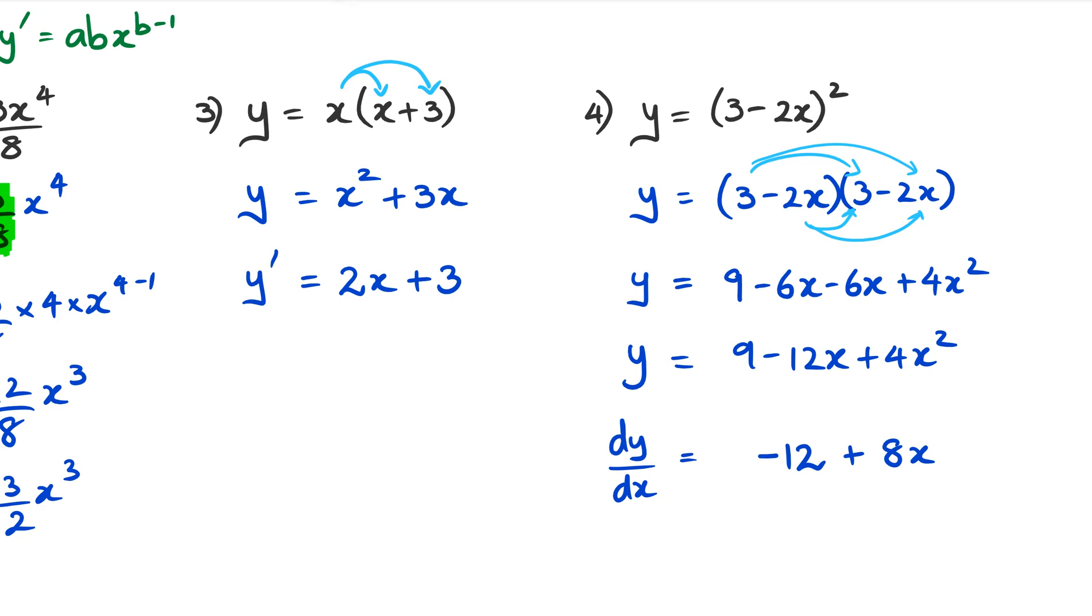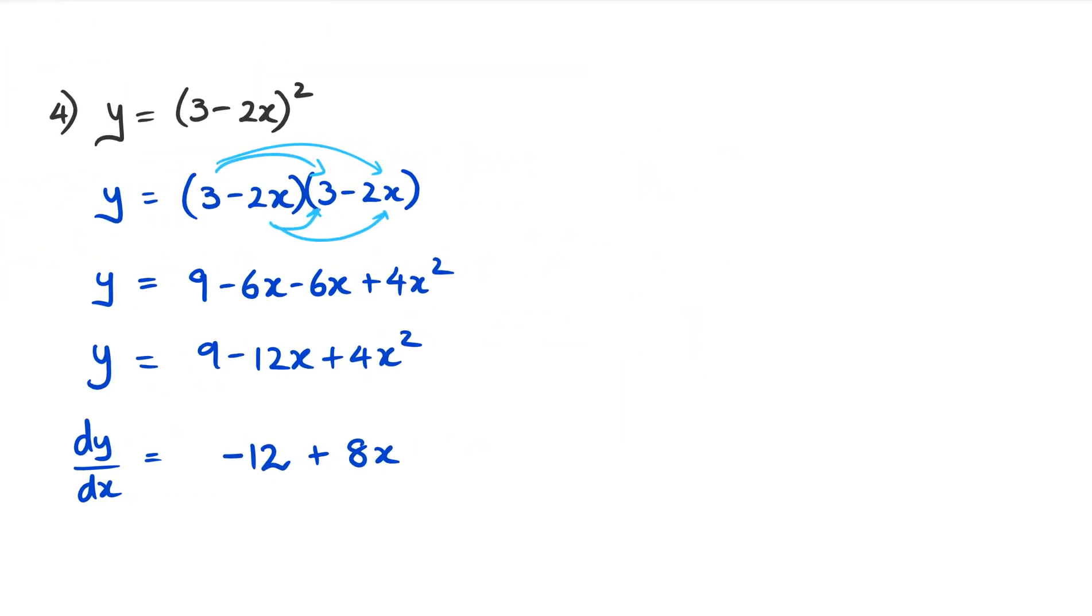I'm just going to do one more example, guys, because I've just seen another type of question. So you could also have something like this where you have x to the power of 4. Let's say we actually end up with a function that actually looks like this. Then your first step is to actually separate the terms, because you can't just differentiate this straight away. So what you'll need to do is to rewrite this as x to the power of 4 over 8 minus 3 over 8. And once you do that, now you should be able to differentiate it.